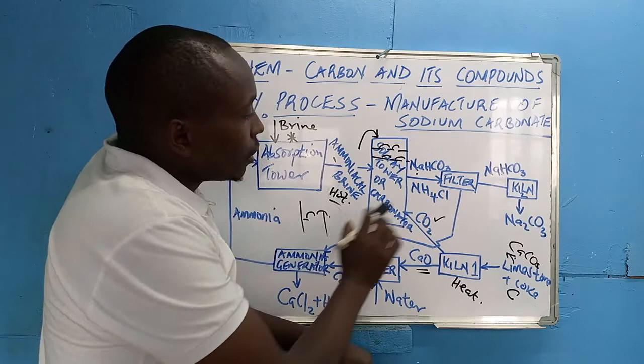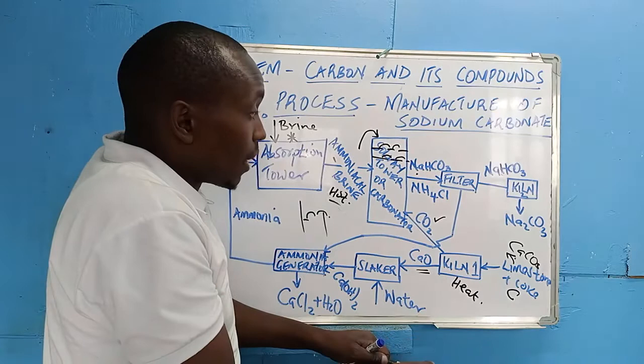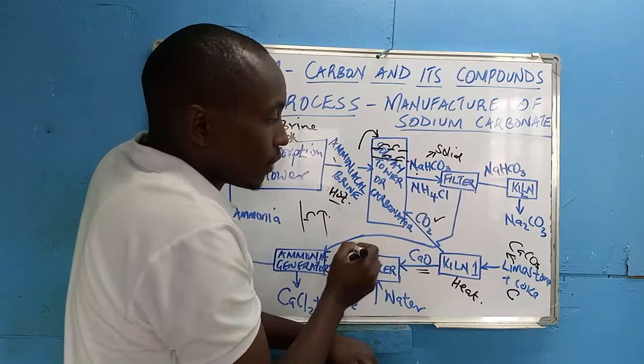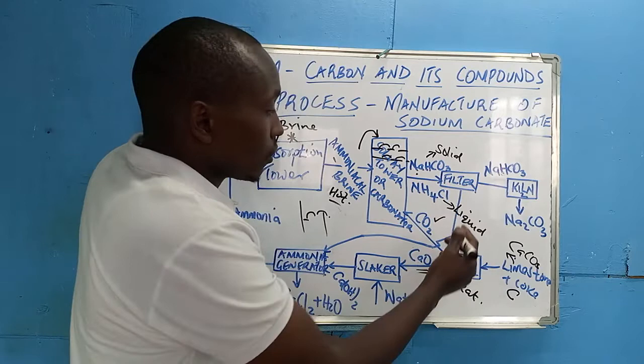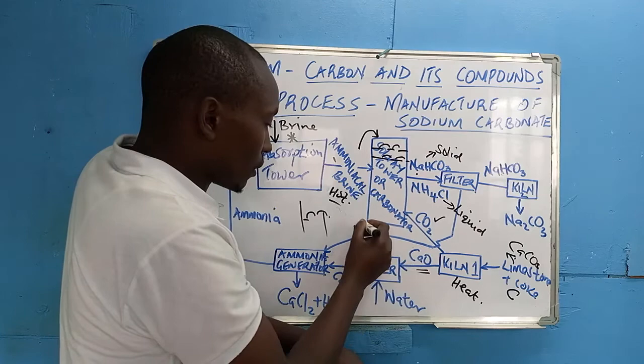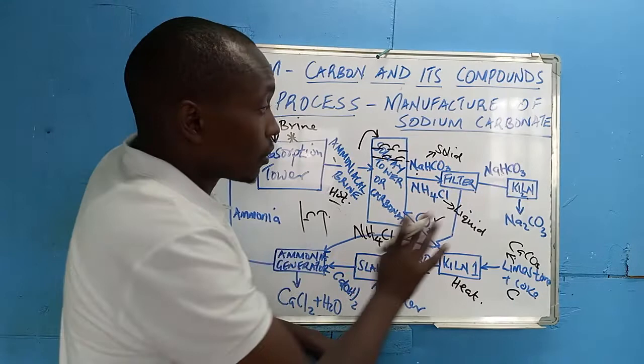Water is one of the raw materials, as you may remember. When the carbonator is constantly cooled, temperatures are significantly lowered. Therefore, sodium hydrogen carbonate comes out as a solid and ammonium chloride comes out as a liquid. The two are separated by filtration. Ammonium chloride is kept for further use elsewhere.